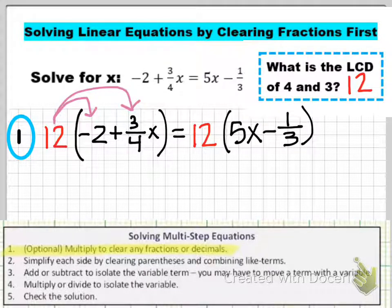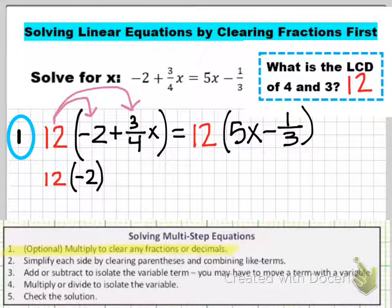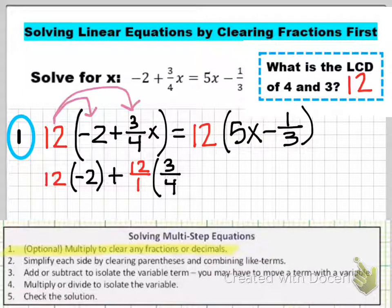Let's go ahead and do that. On the left side, I'm going to distribute the 12. Before I do the multiplication, I'm going to show you how the 12 gets multiplied by every single term. So the 12 is going to get multiplied by the -2, then I have the plus sign, then the 12 is also going to get multiplied by the 3/4x.